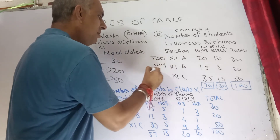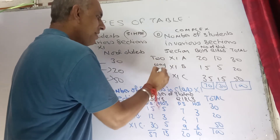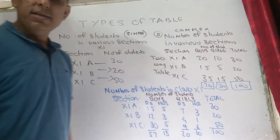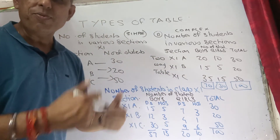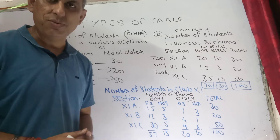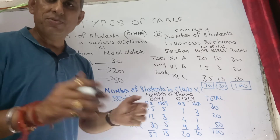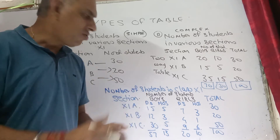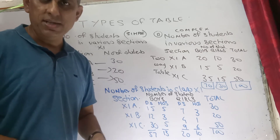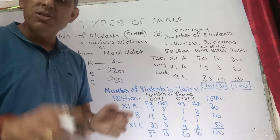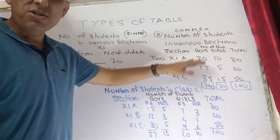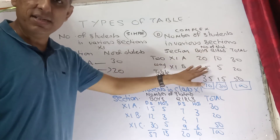Being a part of the complex table, this is a two-way table. If you want to further provide information — like in public schools where some students are day scholars and others are in hostels — we can continue with the same information and not just restrict ourselves to boys and girls.